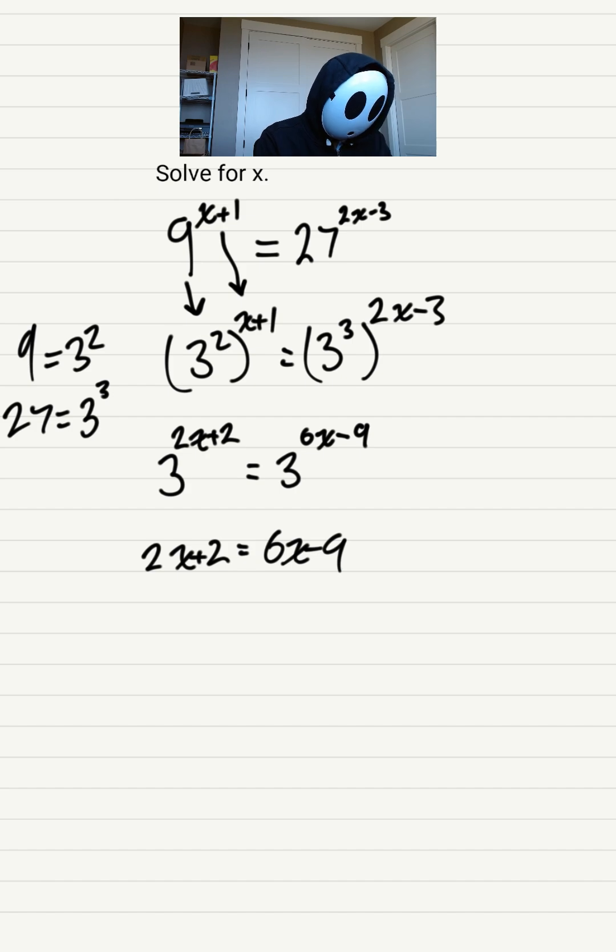From there, it's simple algebra. We're going to put the x's on one side by subtracting 2x from both sides and adding 9 to both sides. This way, the constants go on the left side while the x goes on the right.